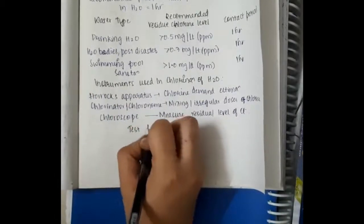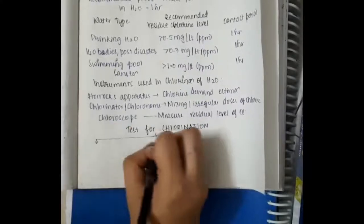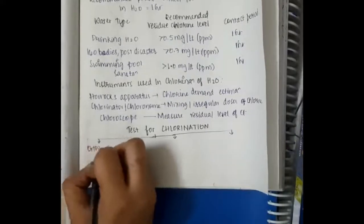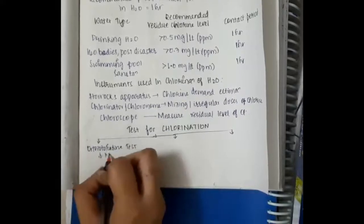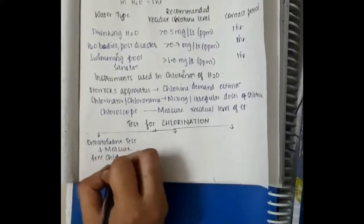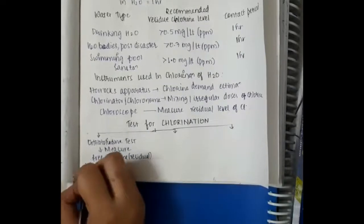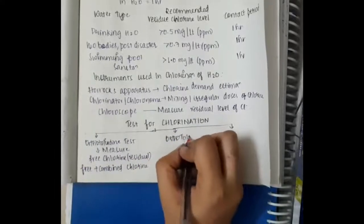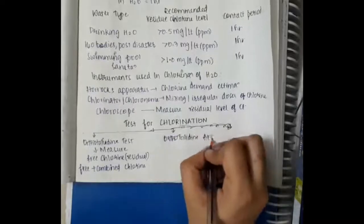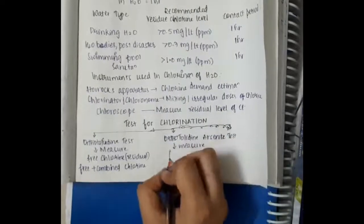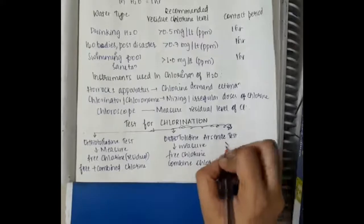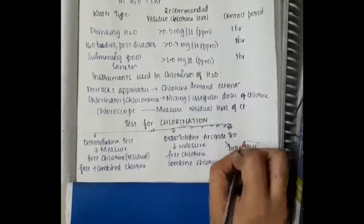Tests of chlorination are of three types. The first test is the orthotoludine test, which measures the free chlorine — that is residual chlorine level — and also the free plus combined chlorine levels. The second is the orthotoludine-arsenite test, which measures free chlorine and combined chlorine separately. It is a better test when compared to the orthotoludine test.